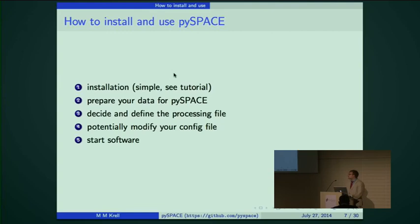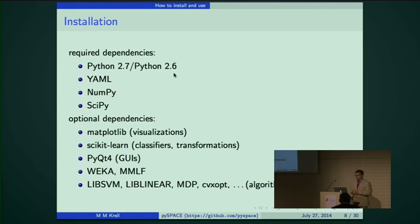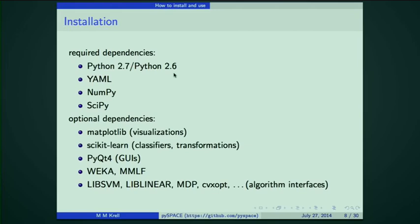How does the software work? I'll first tell you about the installation procedure, then how data needs to be prepared, then how we define the processing file, and how you get it running. The required dependencies are Python 2.7 or 2.6, the YAML package, NumPy, and SciPy.